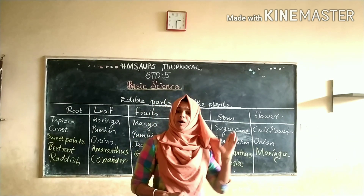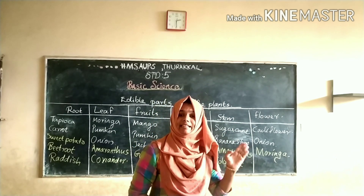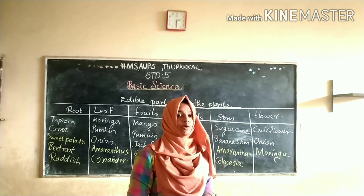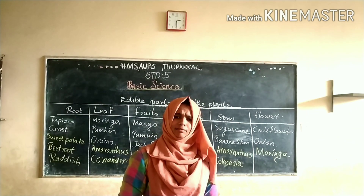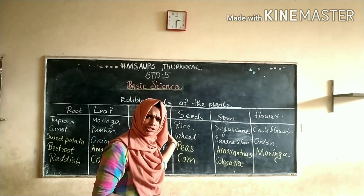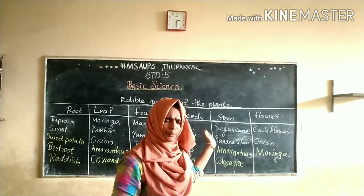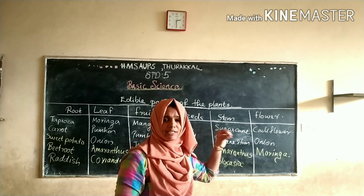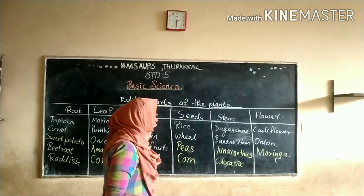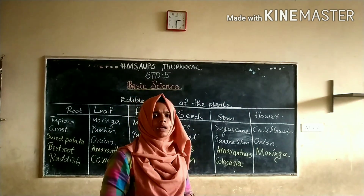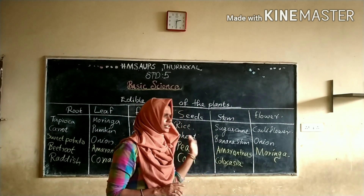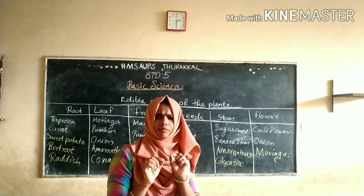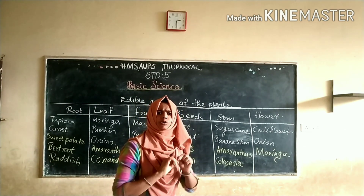Do you watch the video? What could you see in that video? Yeah, so many edible parts of plants. Then, do you finish this table by that video? You understand the parts of plants and write them in each column? Okay, very good. By this table, you understand that some plants are repeated in two or more columns.